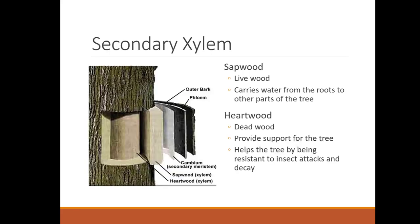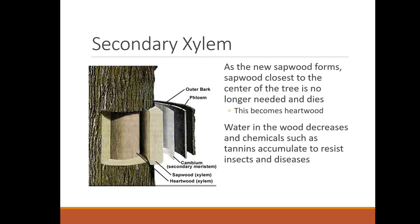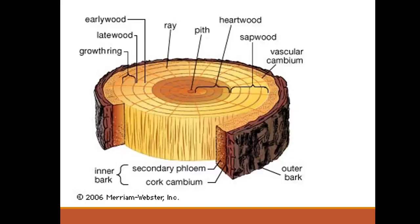Sapwood is live wood that carries water from the roots to other parts of the tree. Heartwood is dead wood found in the very center of the tree — it provides support and helps the tree resist insect attacks and decay. As new sapwood forms, the sapwood closest to the center is no longer needed, dies, and becomes heartwood. Water in the wood decreases and chemicals such as tannins accumulate, helping resist insects and diseases. Here's a slice of a conifer showing what the sapwood and heartwood look like, with the pith still in the center.